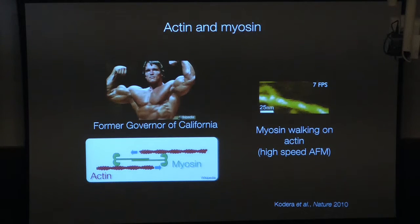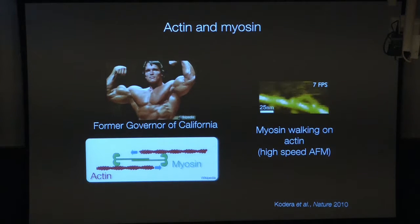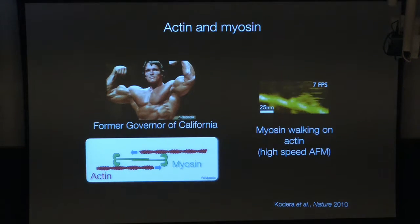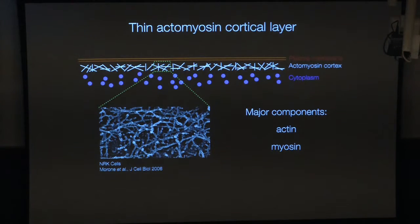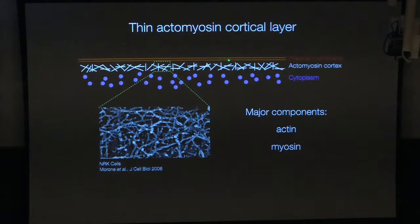Here's my favorite movie from the past years — an incredible accomplishment — which is imaging a single myosin walking along an actin filament using high-speed AFM imaging. You can see the helical actin filament with the helical repeat, and the myosin head walking along it. This molecular activity, in thousands of cells and millions of copies, is essentially driving the forces at the molecular scale to drive the deformations and restructuring that you see at larger scales.